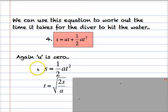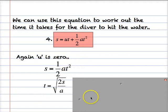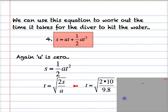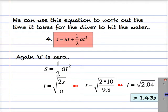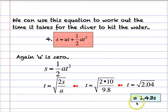Putting the numbers in: 2 times 10 — the height of the board is 10 — divided by the acceleration of 9.81, then the square root of 2 times 10 over 9.8, which is 2.04, gives 1.43 seconds. So it takes the diver 1.43 seconds to reach the water.